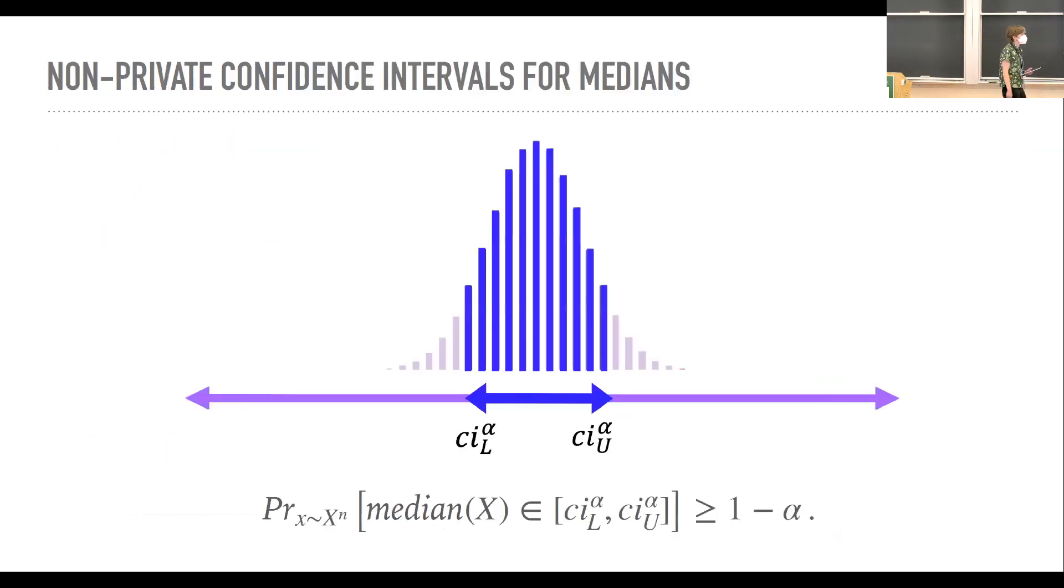So before I talk about the private version, I want to talk about the non-private version of confidence intervals. So let's just recall what a confidence interval is. For a valid confidence interval, we just want this some balance, which I'm going to call CIL and CIU, such that the population median lies in this interval with some probability one minus alpha. And in the non-private setting, our randomness is coming from the fact that we're imagining we're drawing samples from a greater population.